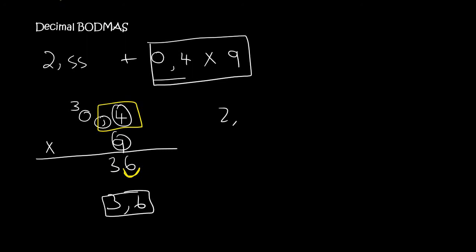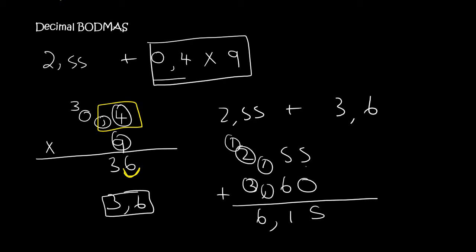So now what we have is 2.55 plus 3.6. When you're plussing, the decimals must be on top of each other. And then you just fill in your number like that. So now there's an empty space here. So you put a 0. And so 5 plus 0 is 0. 5 plus 6 is 1. Notice there's a decimal. So I must put the decimal down. 1 plus 2 plus 3 is 6. And so the answer is 6.15.